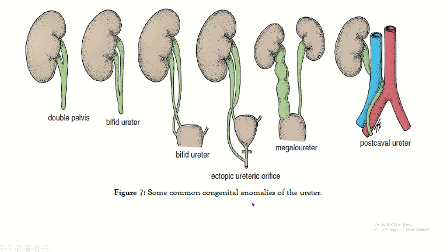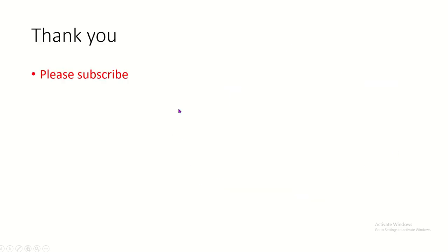Congenital anomalies of the ureter include: double pelvis, bifid ureter, bifid ureter with two openings (one normal, one abnormal ureteric orifice), megaureter, and postcaval ureter. This concludes the brief discussion on the anatomy of the ureter.